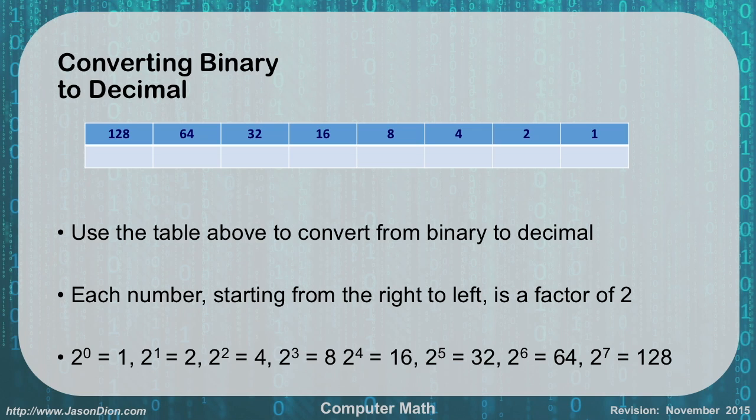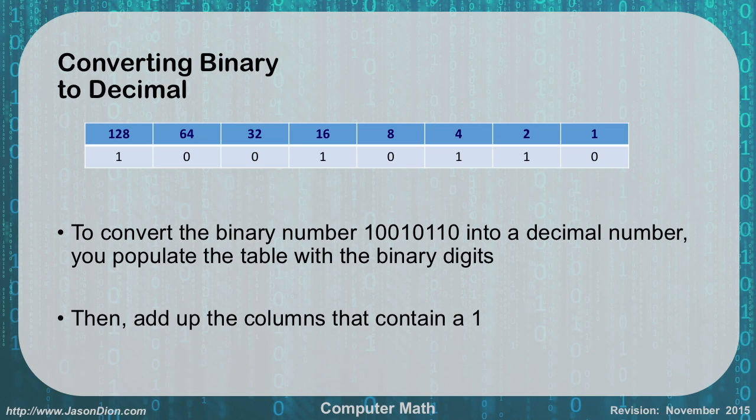And what I'm going to end up doing is I'm going to write my numbers in binary in this chart and then I can just add the digits that we have to get us our decimal number. So for instance, if I wanted to convert 10010110 from binary to decimal.